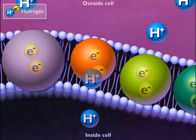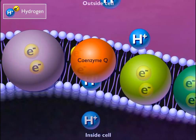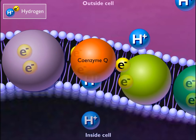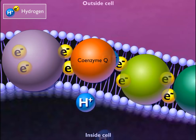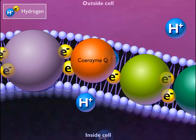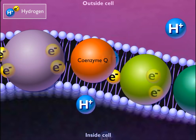Some of the electron carriers, such as coenzyme Q, accept a proton from the inside of the cell membrane as it accepts electrons. The proton is then transported through the membrane as electrons move down the chain.